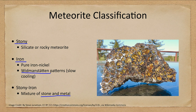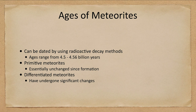Stony iron meteorites are a mixture of stony and iron material, likely from objects that had not completely differentiated — showing a mix of metallic material with inclusions of stony material. As for age, we can date meteorites using radioactive decay methods, and the range is approximately four and a half billion years old.